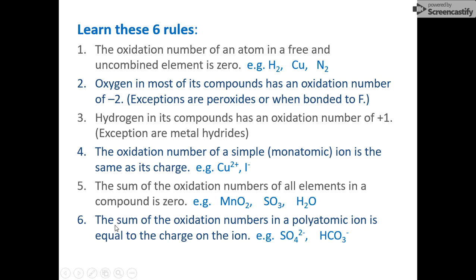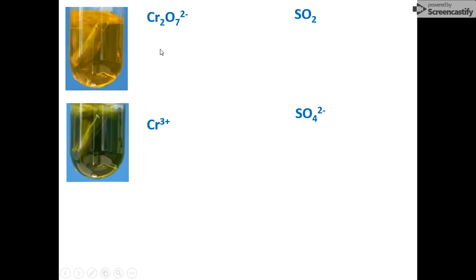The final rule you need to learn off by heart is that if you have an ionic compound that's polyatomic — more than one element in the ion — then the sum of the oxidation numbers won't be equal to zero because it's not neutral; it will be equal to the charge. So let's now look at examples of how you do this.